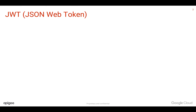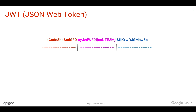Let's see how a JSON Web Token looks like. A JSON Web Token is a set of characters that is divided into three parts. The first one is the header, that talks about the token type as well as the algorithm used.